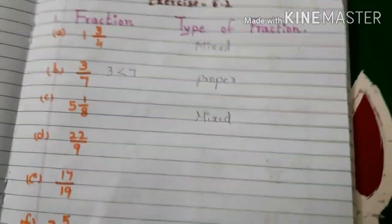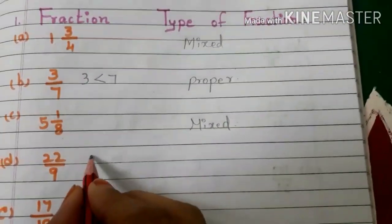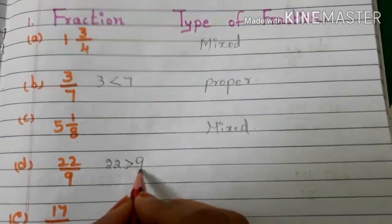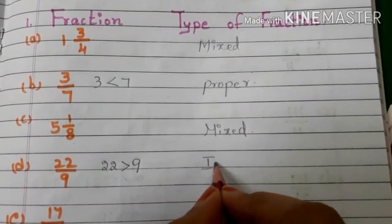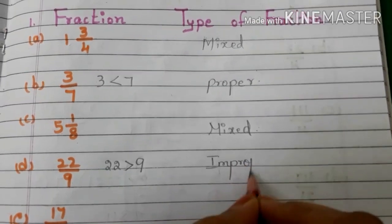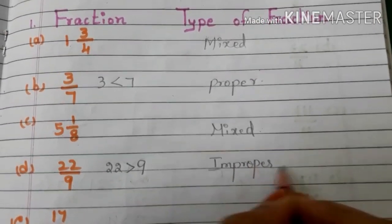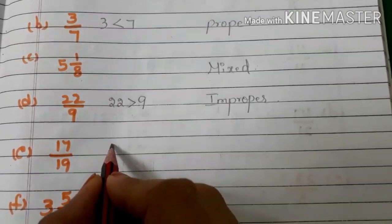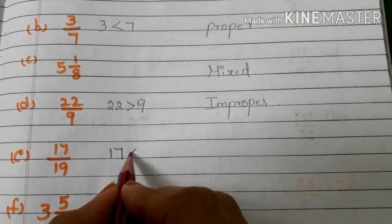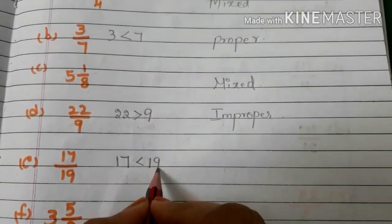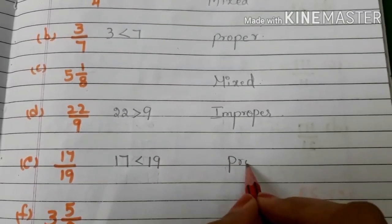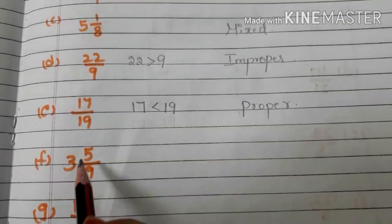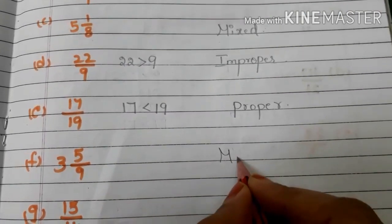Next, D: 22/9. Numerator 22 is greater than denominator 9, so this is an improper fraction. Next, E: 17/19. Numerator 17 is less than denominator 19, so this is a proper fraction. Next, F: 3 and 5/9, so this is a mixed fraction.